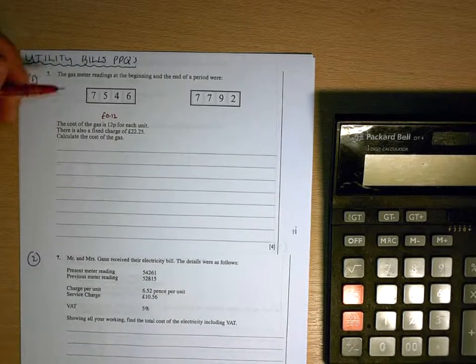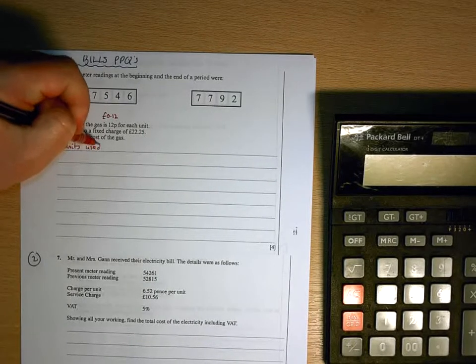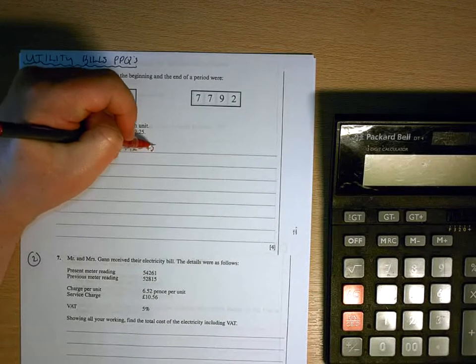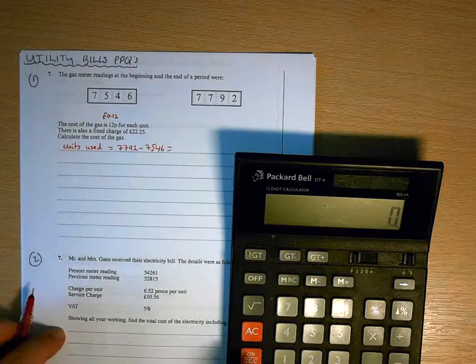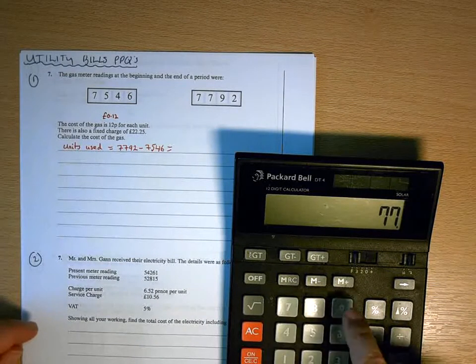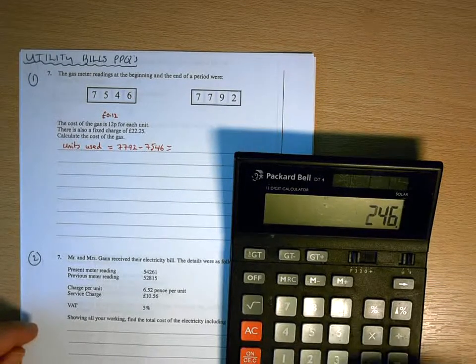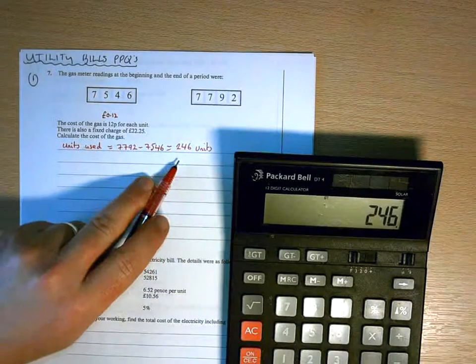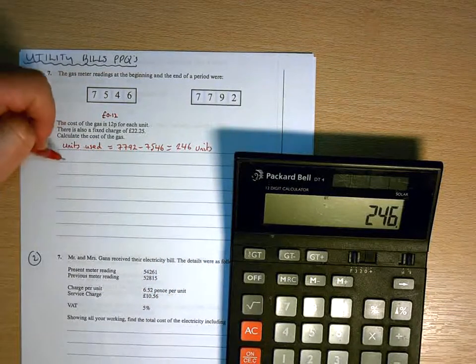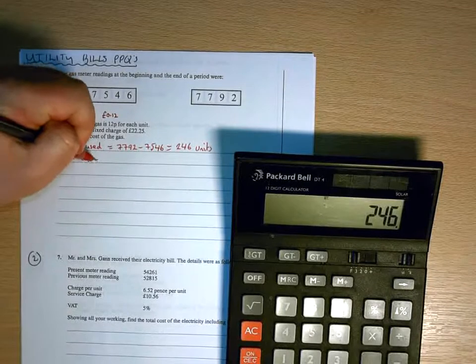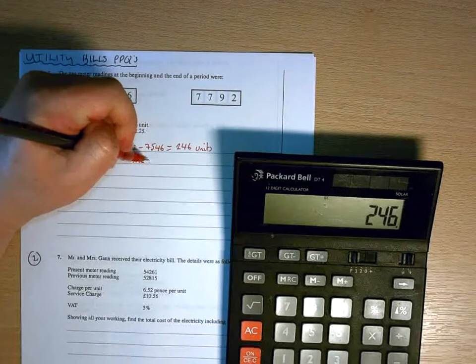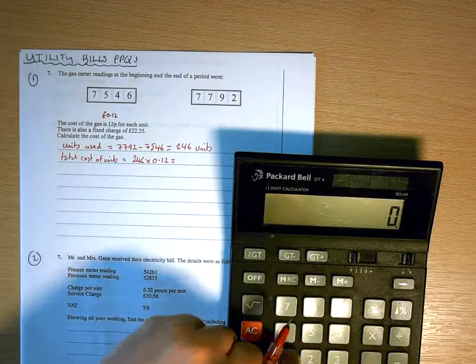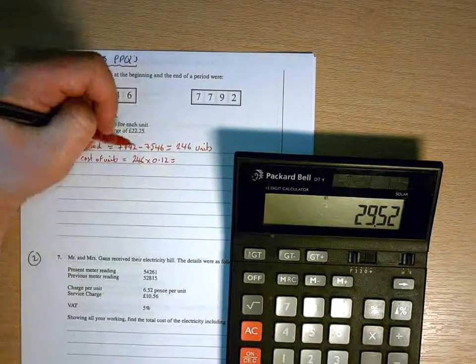Now we need to work out how many units we have used. So it's 246 units of electricity used. Now each of those units is costing us 12 pence. So in order to work out the total cost of the units, we have to do 246 lots of 12 pence. So that's going to be £29.52.